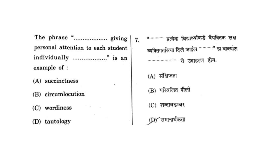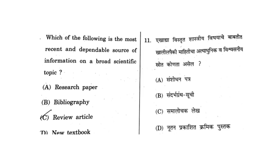Moving on to the next question: which of the following is the most recent and dependable source of information on a broad scientific topic? Bibliography is ruled out, a new textbook is also ruled out because for broad scientific terms you cannot rely on these. The competition is between research paper and review article. Most recent could be a research paper or review article, but since the question specifies a broad scientific topic, a research paper focuses on a small scientific topic. A review article covers hundreds of papers on a broad topic, so the correct answer is C — review article.